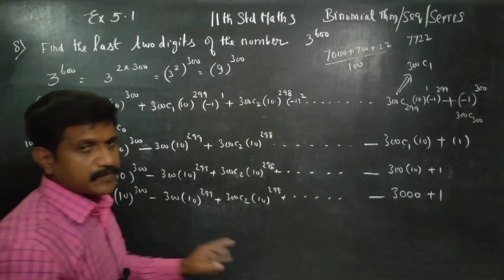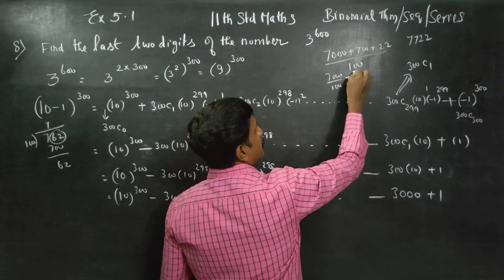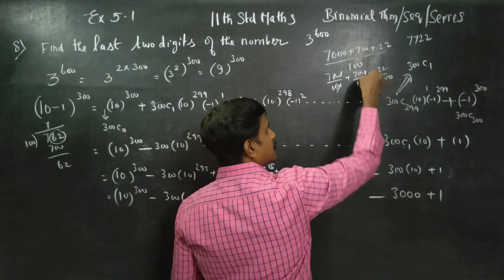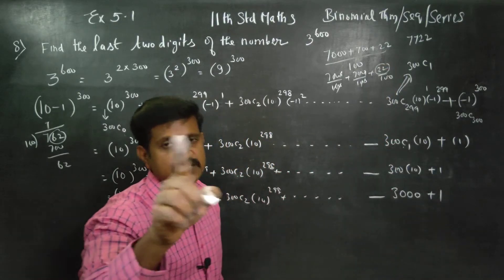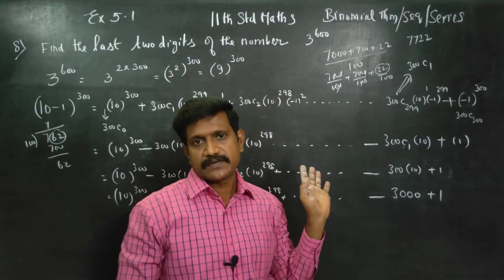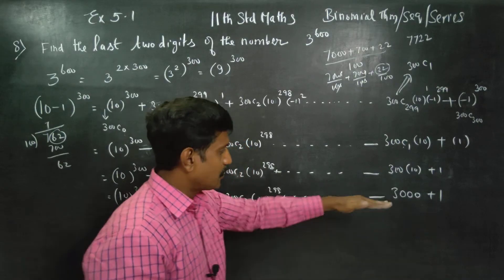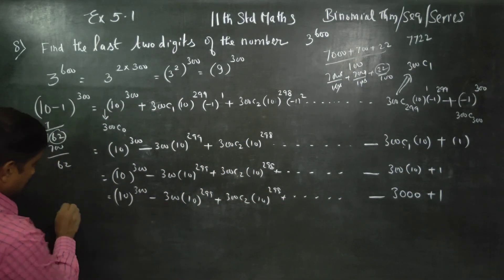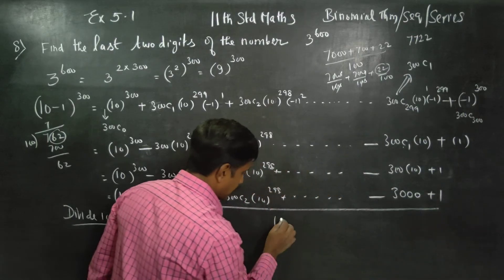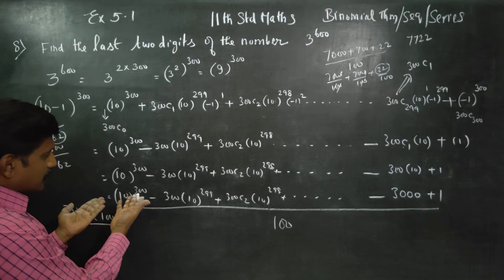This gives us the last two digits of 3 power 600.